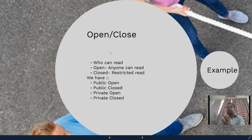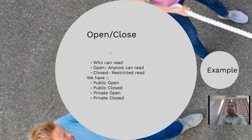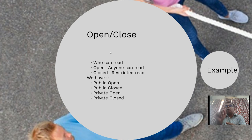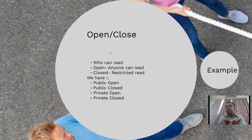Let's focus on the terms open and closed blockchain platforms, which are often confused with public and private. An open blockchain platform means anyone can read. A closed blockchain platform means restricted read access. When combined with public and private — referring to who can write — we get four combinations: public open (open for write and read), public closed (open for write but restricted read), private open (private write but open read), and private closed (private write and restricted read).